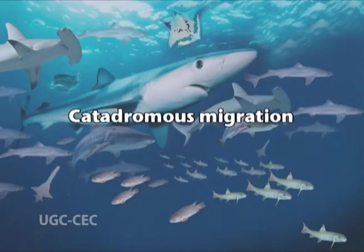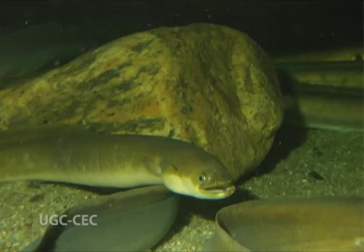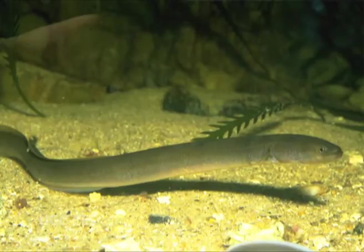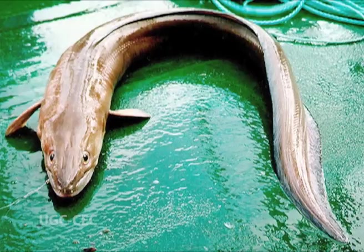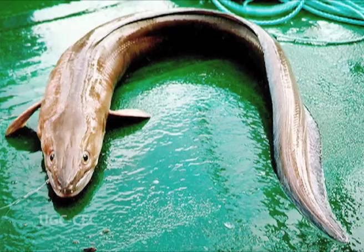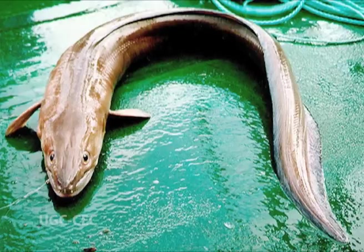Catadromous migration: the life history of the European eel, Anguilla vulgaris, has four stages — the yellow eel representing the growing and feeding form in the river; the yellow eel changing into the silvery eel ready for seaward migration for spawning; a pelagic larval stage of eel; and the metamorphosis of the pelagic larval stage to the elver — a snake-like marine or fresh water fish with slimy, usually scaleless skin and an even vertical fin but no ventral fins.